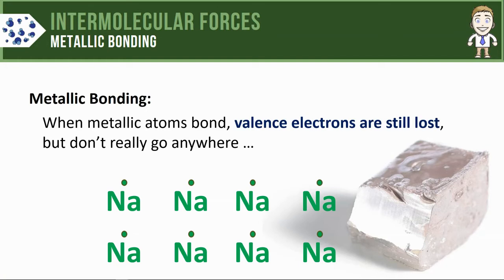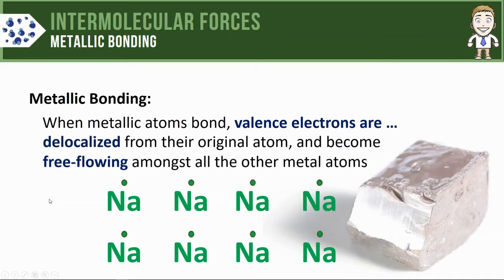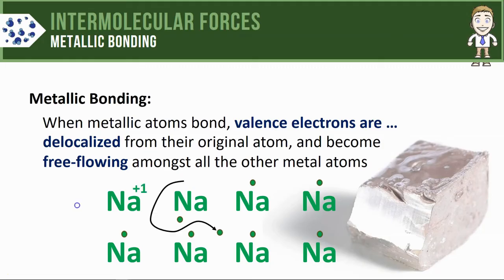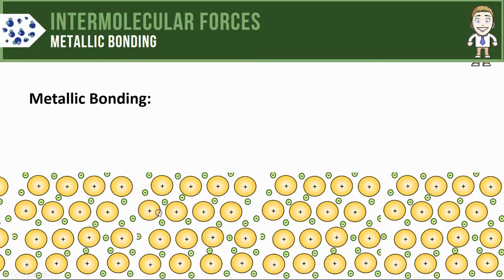With metallic bonding, you still have metal atoms trying to lose their valence electrons, but those valence electrons don't really have anywhere to go. Instead, those valence electrons become delocalized from their original atom and become free-flowing amongst all the other metal atoms in the sample. This is one of the key ideas — make sure to write that down. In the model, each valence electron is removed and each sodium atom attains a +1 charge, and the lost electrons are now free to move in and amongst all of the sodium atoms.